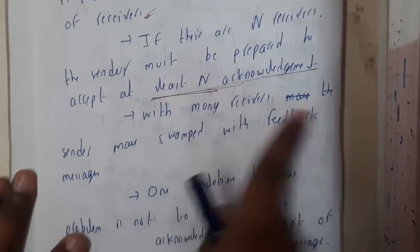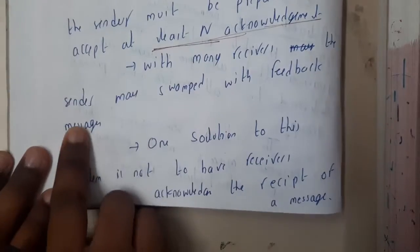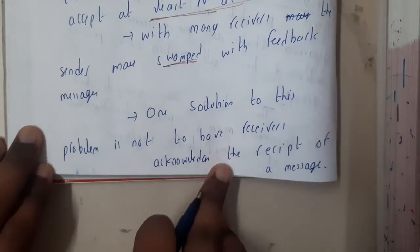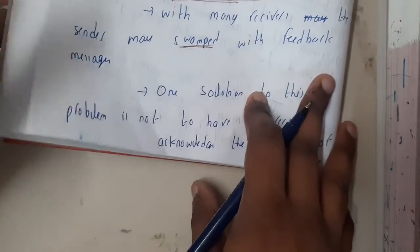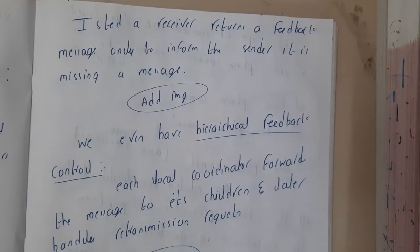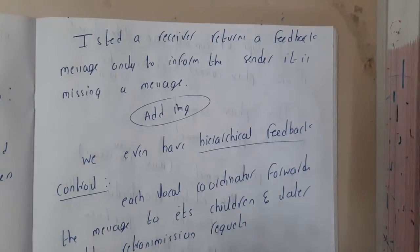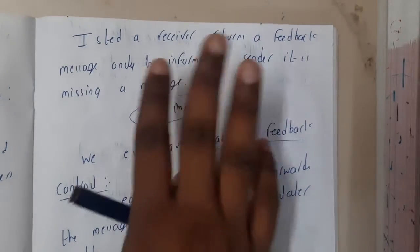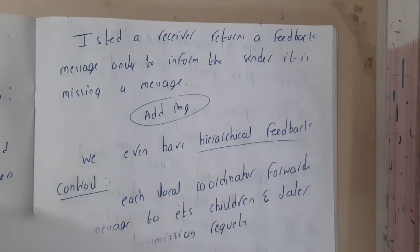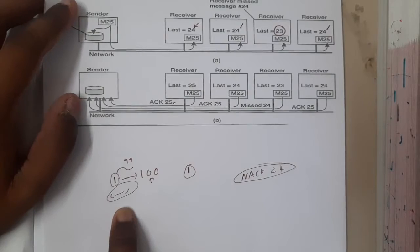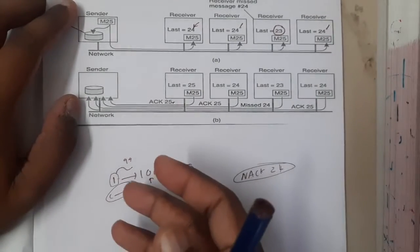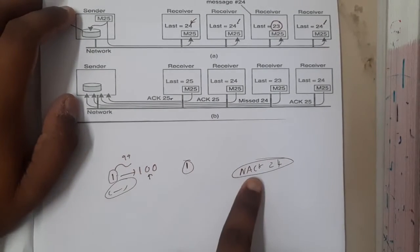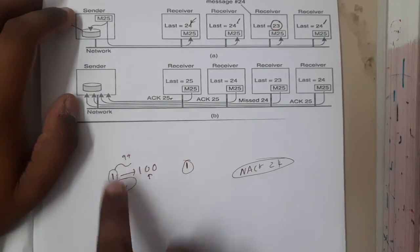With many receivers, the sender may be swamped with feedback, that is overflowed. One solution to this problem is not to have a receiver acknowledge the receipt of the message. Instead of the receivers returning feedback, they should only send whenever there is a negative value. Using this mechanism, we could think it could be an advantage, but the buffer size will not be infinite. There is always a limited buffer, so you cannot guarantee the received packets also. You will be thinking that okay, first packet is received by all, second packet is received by all, third packet is received by all if you don't get negative acknowledgement, but it could be delayed also. So that is an issue, and the buffer size - these are the two major issues here.